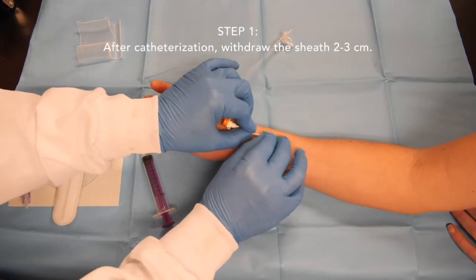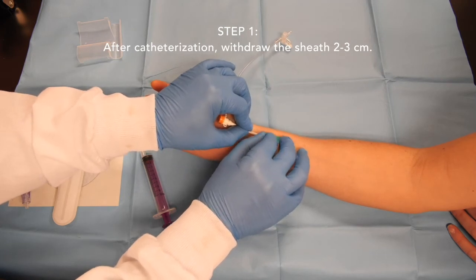After catheterization, withdraw the introducer sheath 2-3 cm.